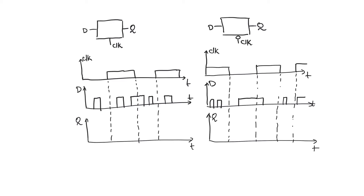On the left hand side we see an active high latch. The active high latch will be transparent in the one phase of the clock and opaque in the zero phase of the clock.